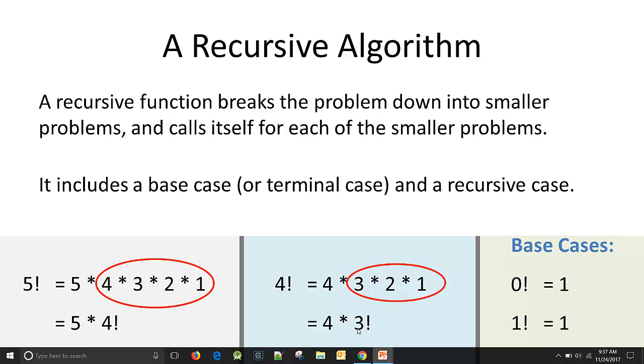Factorial really lends itself very nicely to using a recursive solution to solve the problem. Because it's really easy to break the problem down into smaller pieces by peeling off the highest number and passing in the next number to call the function again.